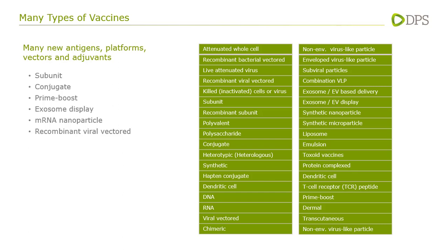There are mRNA nanoparticle vaccines, which we'll discuss more today. And there are recombinant viral vector vaccines where you take a non-pathogenic virus and put on its surface a particular protein — for example, one you want an antigenic response to — so the virus has a recombinant, non-native piece on its exterior surface to help generate a good immune response to that recombinant piece of the pathogen.